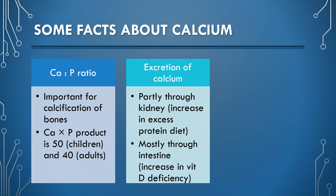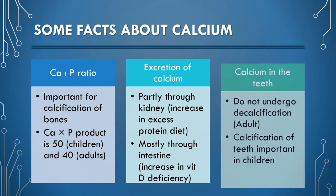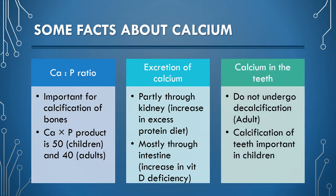The excretion of calcium through the kidney increases when an excess protein diet is consumed. However, mostly the excretion of calcium is done through the intestine, and it gets increased when there is a deficiency of vitamin D. Vitamin D is very important for absorbing calcium from the duodenum. The teeth calcium is not subjected to regulation as observed for bone calcium — adult teeth, once formed, do not undergo decalcification to meet body needs.